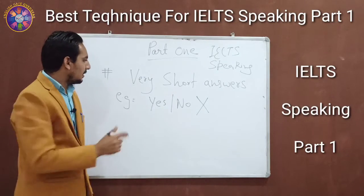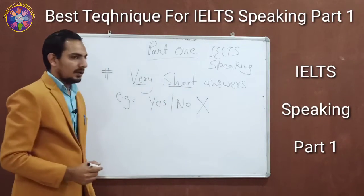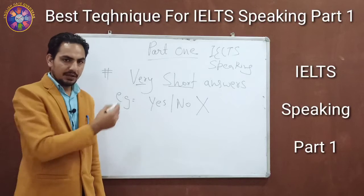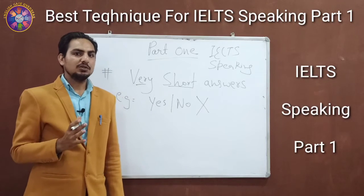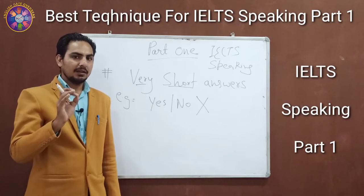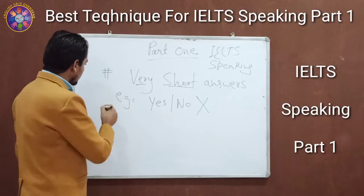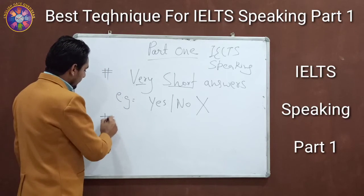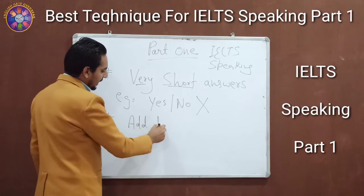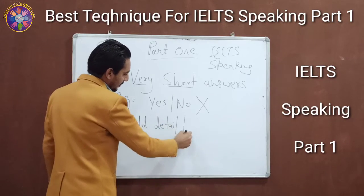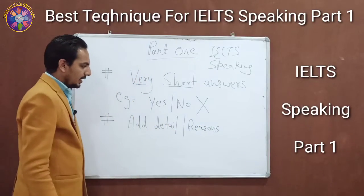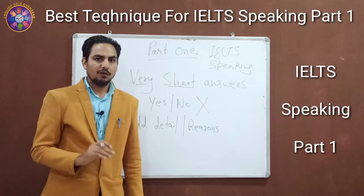We can't give very short answers. Now you will be thinking: if we can't give single sentence or very short answers, then how long should the answer be? I can't give you an exact length, but I can tell you the structure. You will have to add some detail to your answers, or some reasons. A couple of reasons are enough.